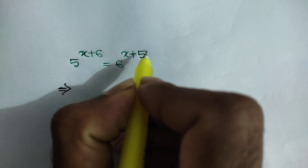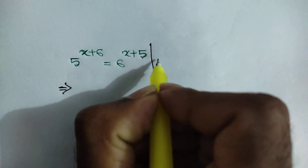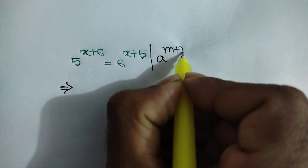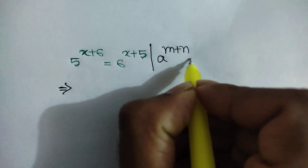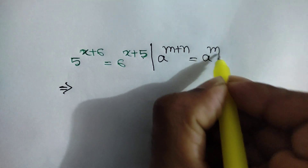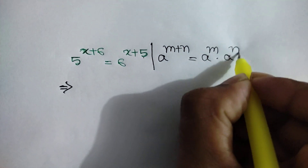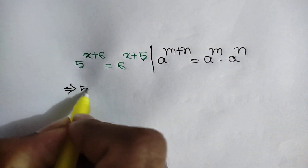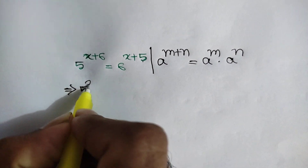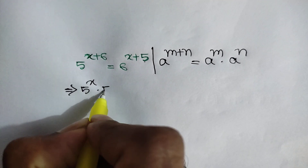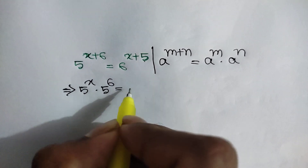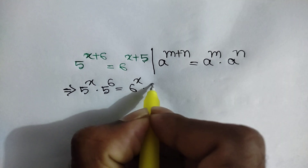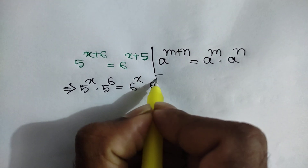Here we can apply this rule: a to the power m plus n is equal to a to the power m times a to the power n. So we can write 5 to the power x times 5 to the power 6 is equal to 6 to the power x times 6 to the power 5.